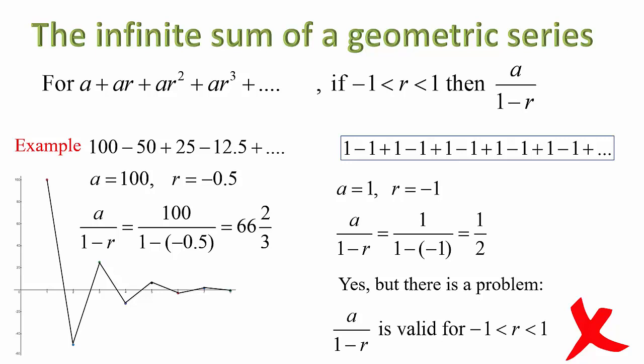But hold on, there's a problem. The infinite sum formula, a over 1 minus r, as was stated at the top, is only valid, it's only true when the value of r is between negative 1 and 1. We use the value of r equals negative 1, which is not allowed. So even though this method seems to work, it is not a valid mathematical proof.